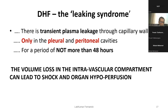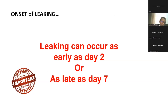The volume loss in the intravascular compartment during leaking can lead to shock and organ hypoperfusion. When there is hemodynamic compromise, the body prioritizes vital organs by reducing blood to the splanchnic circulation, causing liver and gut ischemia, which can lead to necrosis and bleeding — especially if NSAIDs have been given. I have seen patients leak as early as day two and as late as day seven.